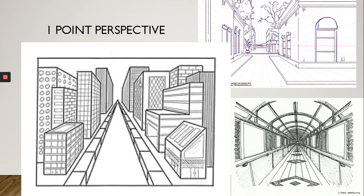We went through our three different kinds of perspective — one point, two point, and three point — in the previous videos. I suggest you do those activities and actually try to draw each one; it'll help cement the concepts. In one point perspective, we've got examples where things disappear into the distance: a road converging, a corridor, and a street where all the buildings go towards that one point.